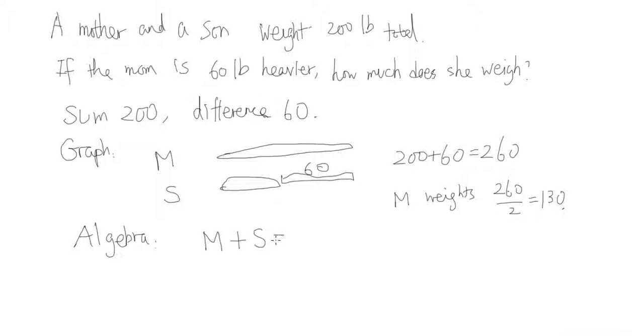The sum is 200, so M + S = 200. The difference is 60, so M - S = 60. Now you have two equations written this way.